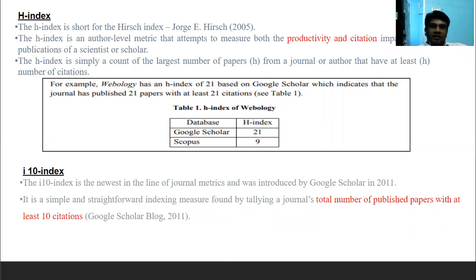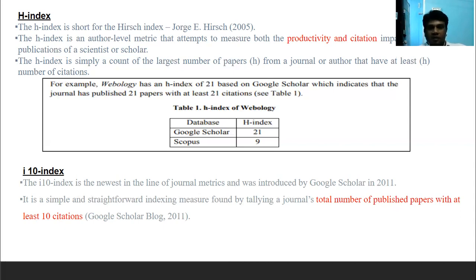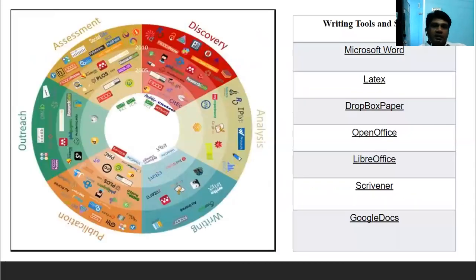The H-index and I-10 index are also used as metrics. The H-index, created by George E. Hirsch in 2005, measures productivity and citation impact. For example, a journal with an H-index of 21 means it has published 21 papers each cited at least 21 times. The I-10 index, introduced by Google Scholar in 2011, represents the total number of published papers with at least 10 citations. These are various tools for analyzing, writing, publishing, and assessing research papers.